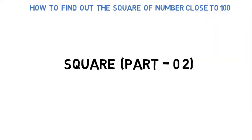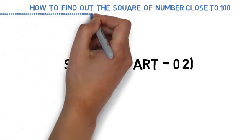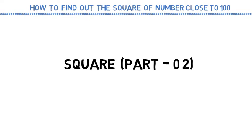That means you will be able to find out the squares near to 100 within 3 seconds. Yes, you are listening this correctly, within 3 seconds. So here we start.